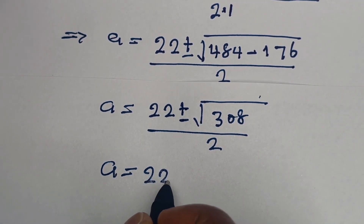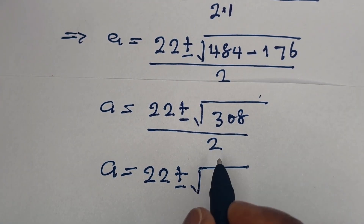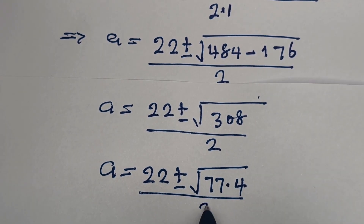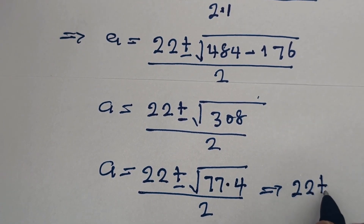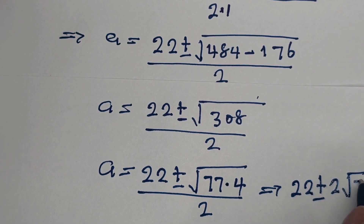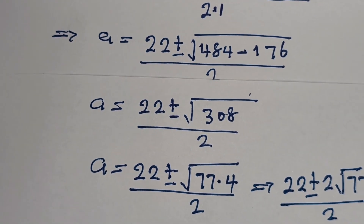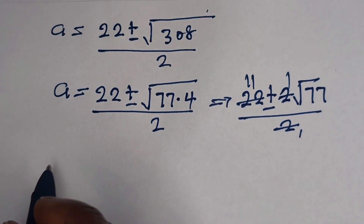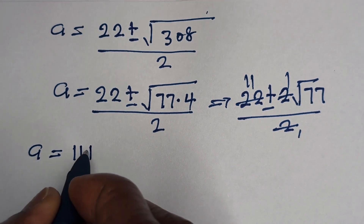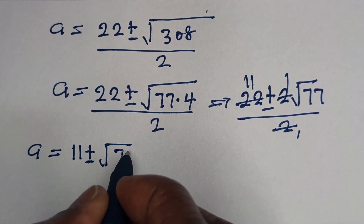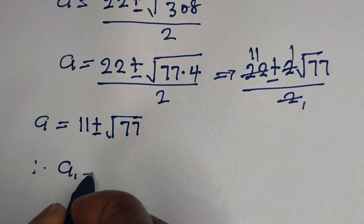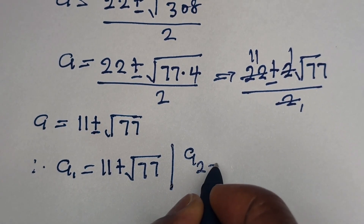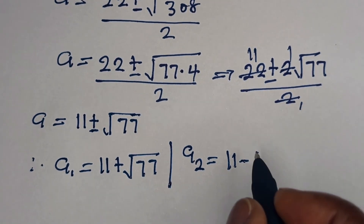A is equal to 22 plus or minus square root of 484 minus 176, that is 308, all over 2. The square root of 308 can be written as square root of 77 multiplied by 4, so this becomes 22 plus or minus 2 square root of 77, all over 2, which simplifies to A is equal to 11 plus or minus square root of 77. Therefore A1 is equal to 11 plus square root of 77, and A2 is equal to 11 minus square root of 77.